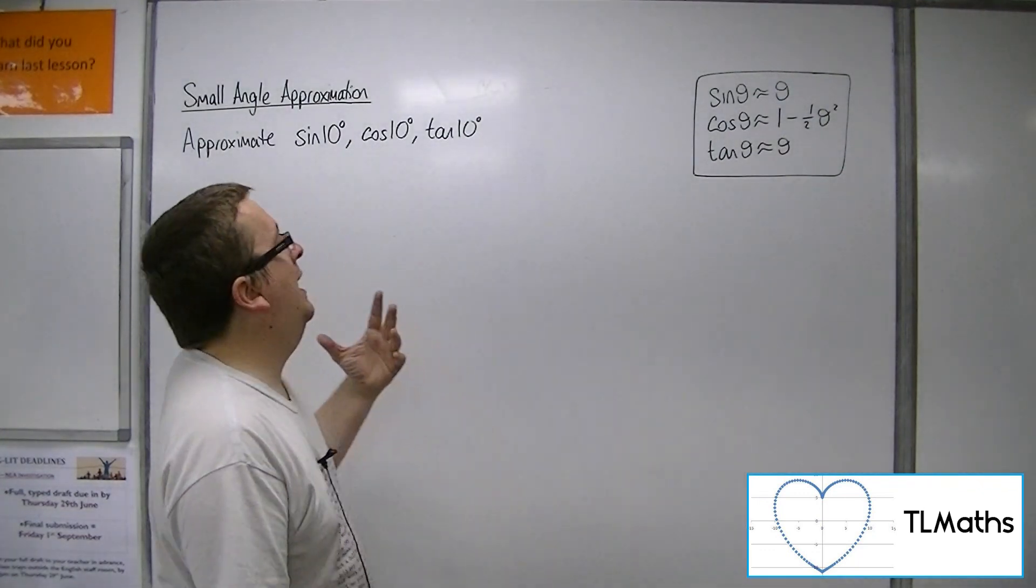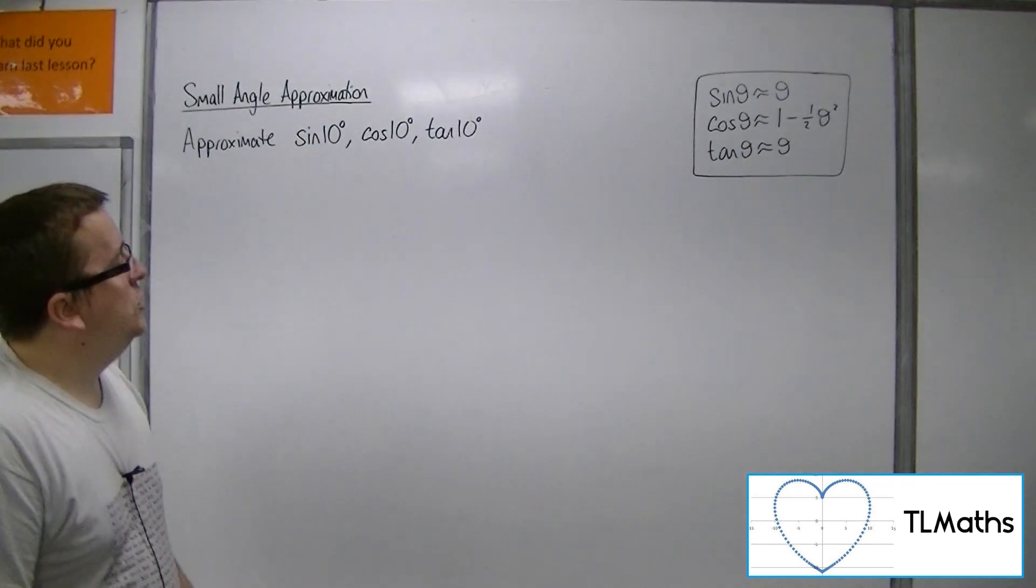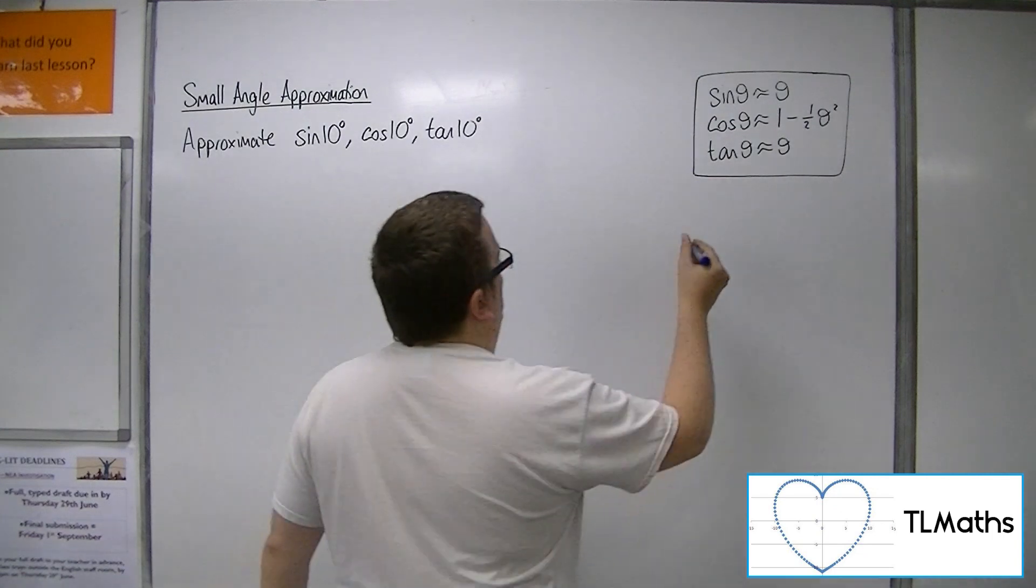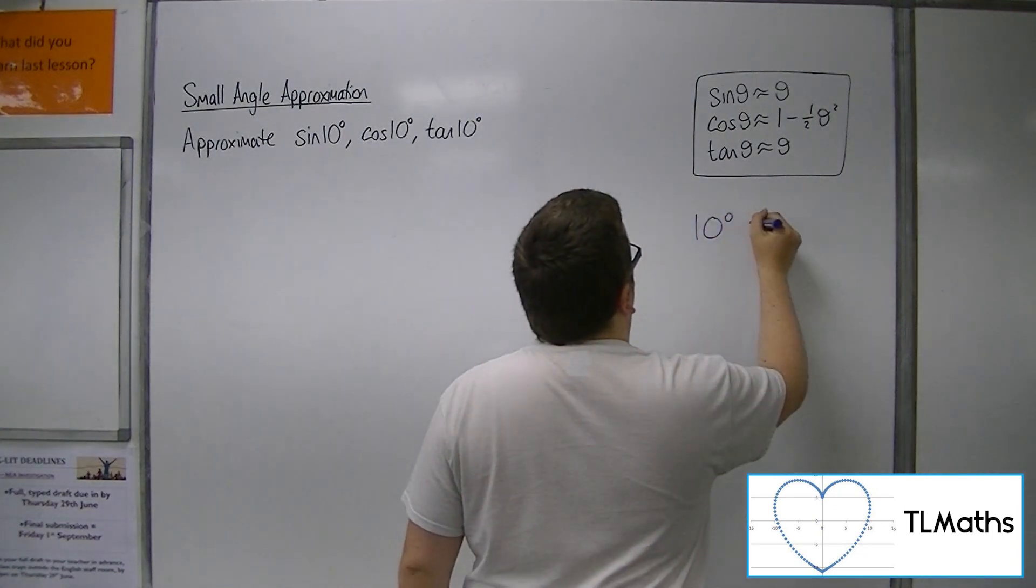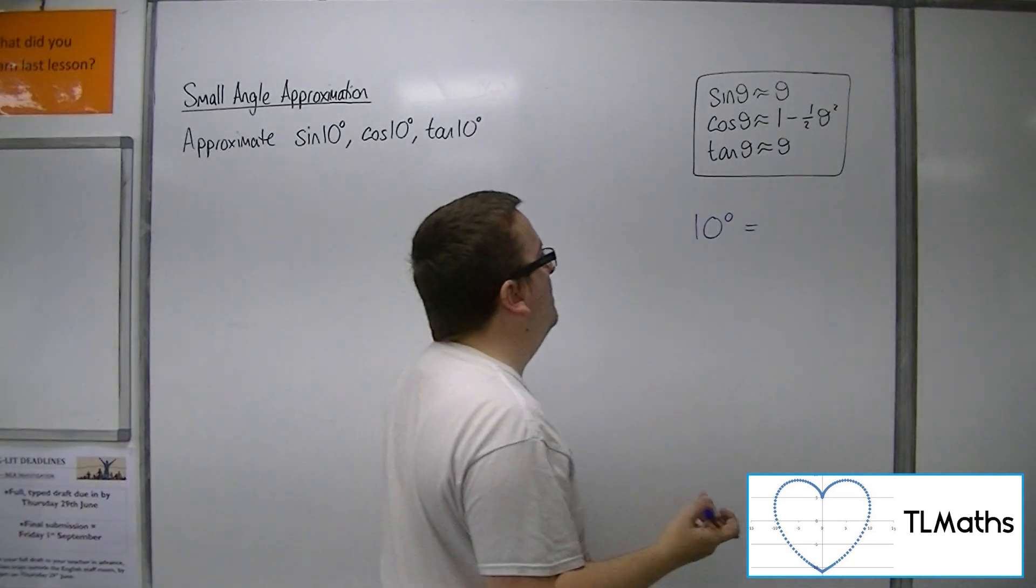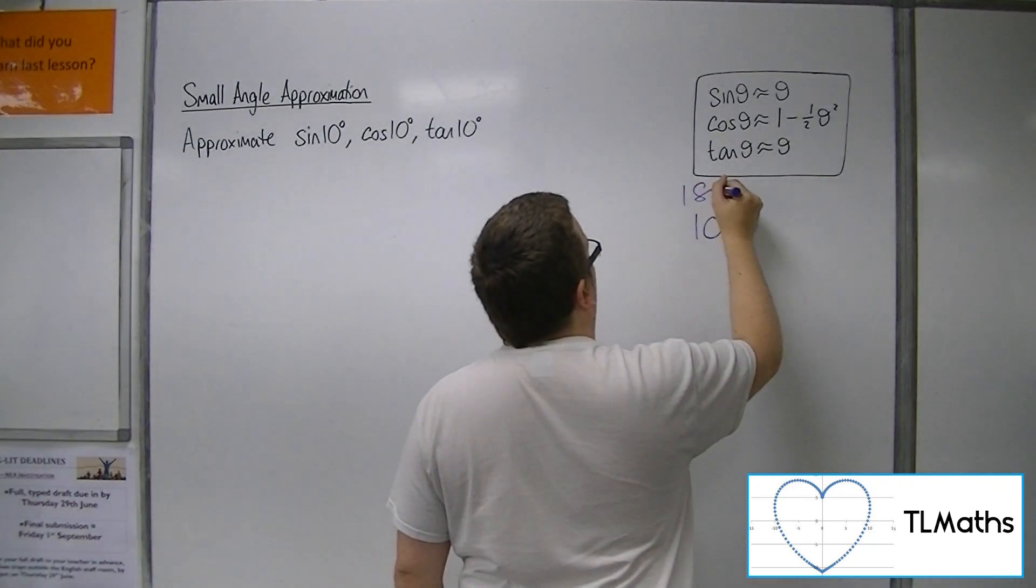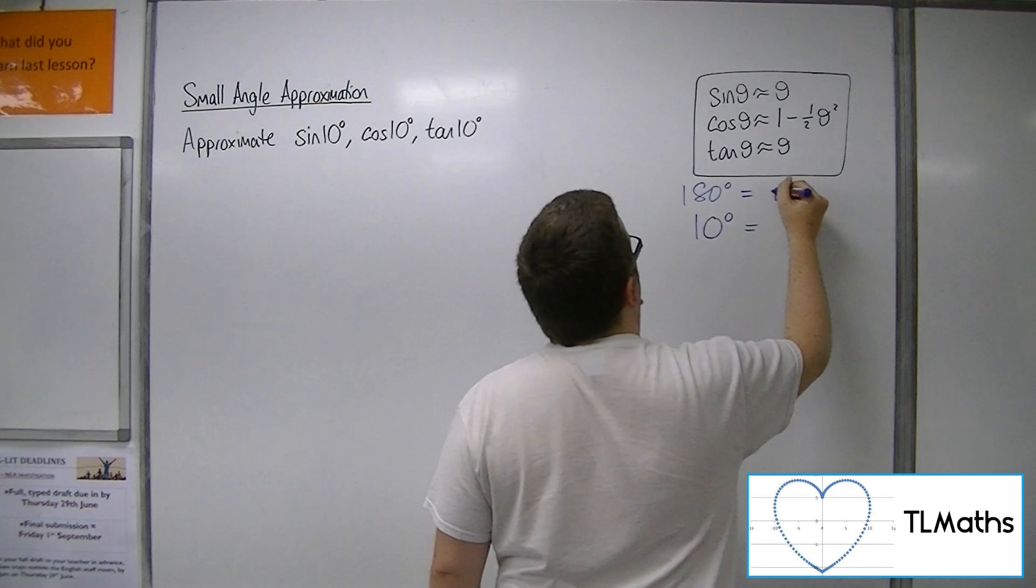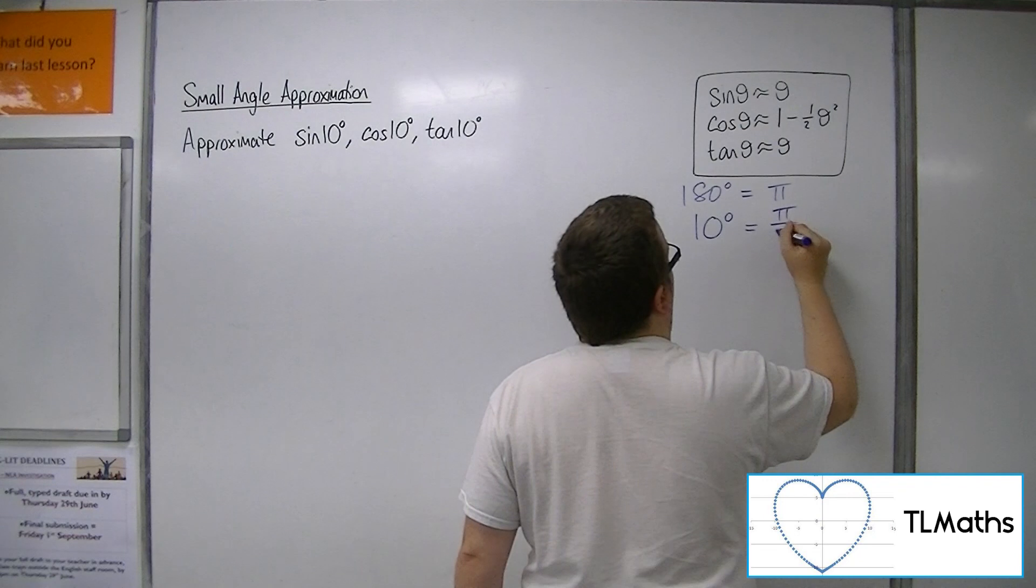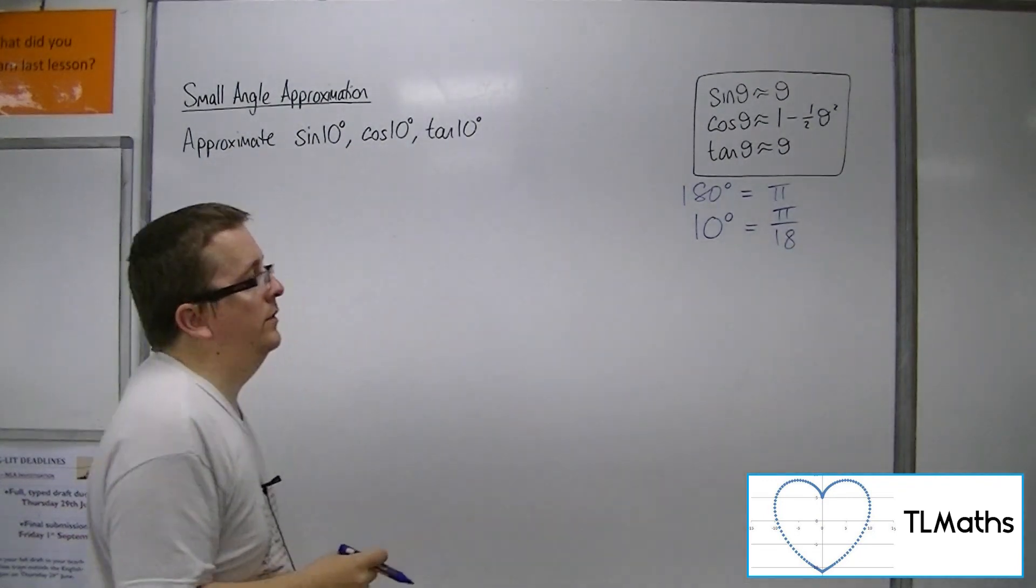So you have your angle currently in degrees, so we're going to need to convert them. So 10 degrees is what radians? Now what you've got to remember is that 180 degrees was pi radians. So 10 degrees is pi over 18 radians, dividing both sides by 18.